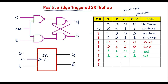If S is 1 and R is 1, whether Qn is 0 or 1, the flip-flop is not defined. In an SR flip-flop, if both inputs are 1, the next state cannot be determined — this is called the indeterminate state.